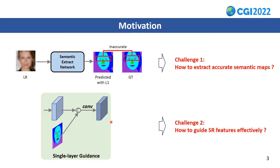In terms of guidance, simply concatenating the semantic map with the features at each layer of the guidance network is inefficient, because super-resolution features cannot have direct access to semantic-specific information. So, how to effectively use semantic maps to guide super-resolution features is another challenge.